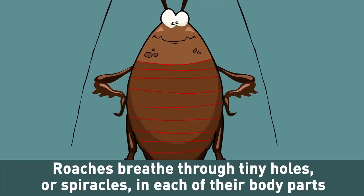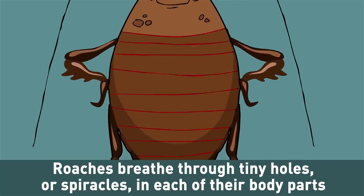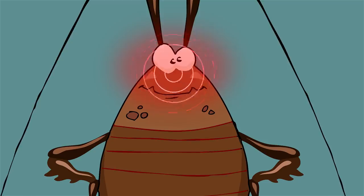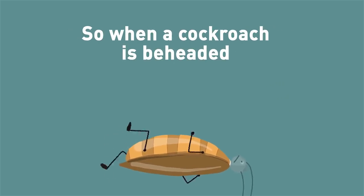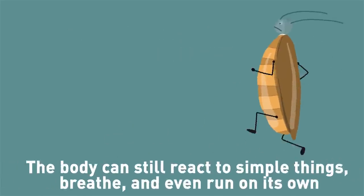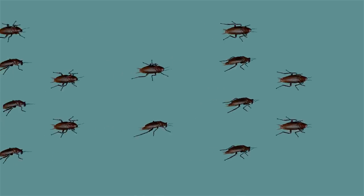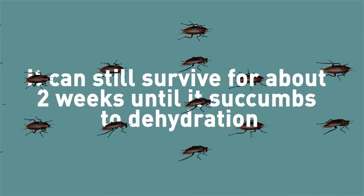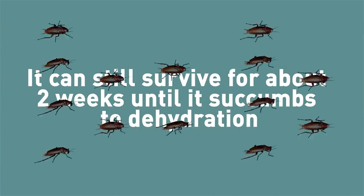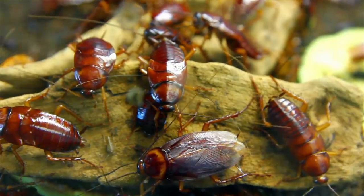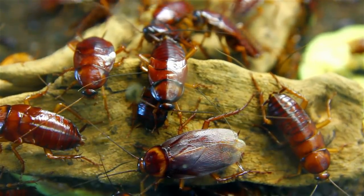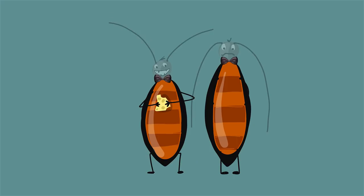Roaches breathe through tiny holes, or spiracles, in each of their body parts, and that's not controlled by the brain either. So when a cockroach is beheaded, its body can still react to simple things, breathe, and even run on its own. It gains much less information than it would with the brain present, but it can still survive for about two weeks until it succumbs to dehydration. Roaches need their head to feed and drink, so when they lose this ability, they only live for as long as they have enough food in their belly to last. You can almost pity them. Almost.